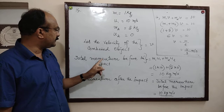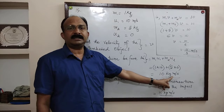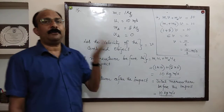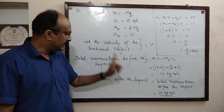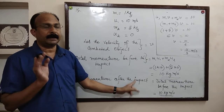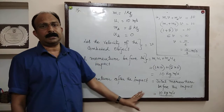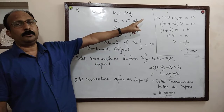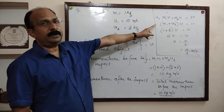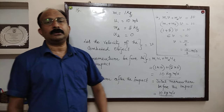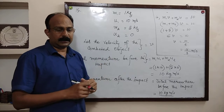Summary for Question 15: Part one — total momentum before impact using M1×U1 + M2×U2 = 10 kg·m/s. Part two — total momentum after impact: by the Law of Conservation of Momentum, it equals 10 kg·m/s. Part three — using (M1 + M2)×V = 10, we get V = 5/3 m/s. I hope that is clear to all of you.